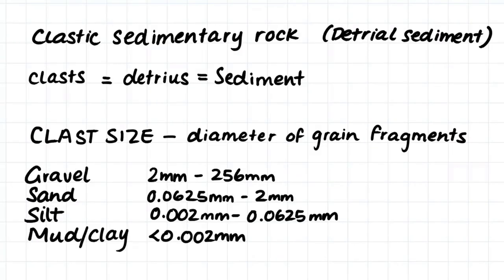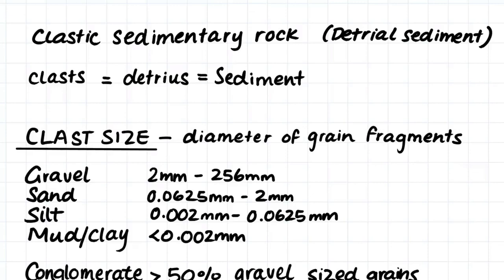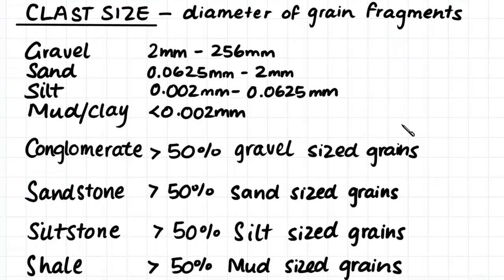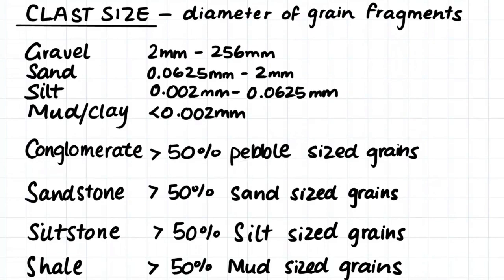In this video we're looking at clastic sedimentary rock, which is made up of detrital sediment. The words are quite interchangeable — clast, detritus, or sediment all refer to the grains of rock which make up our sedimentary rock. First of all, we're concerned with the sizes of the clasts that make up our sedimentary rock. Clast size is just the diameter of the grain fragments.